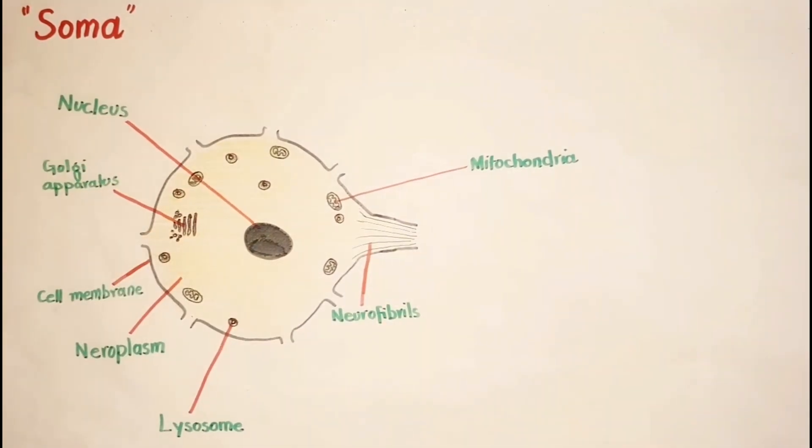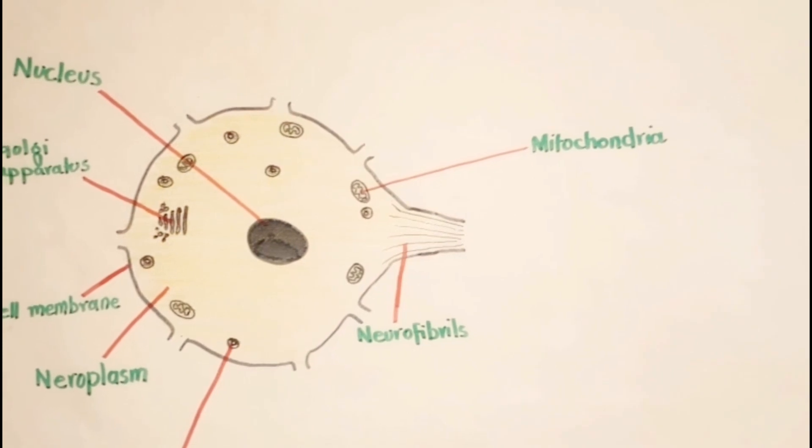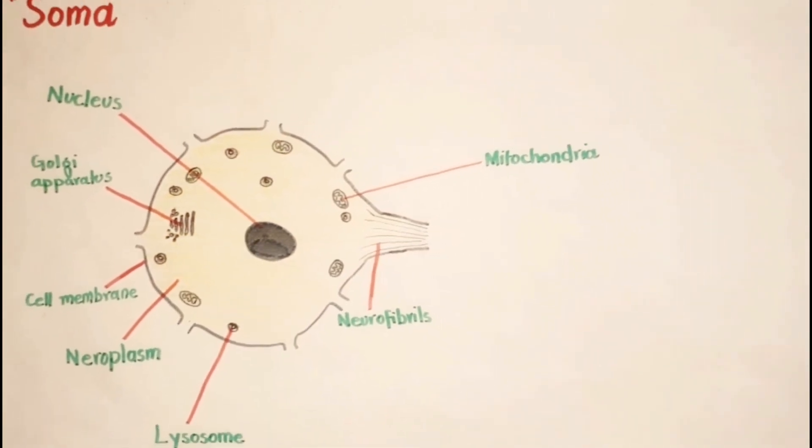Neuron cell body does not contain centrosomes so the nerve cell cannot multiply like other cells.